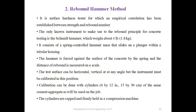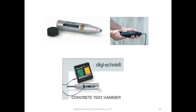The rebound hammer weighs 1.8 kg. When you press it against the concrete, the spring inside records a rebound value on the scale, giving you the strength of the concrete and the steel inside, so you can know the current strength of that particular structure.